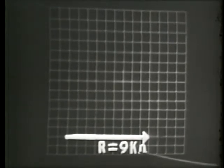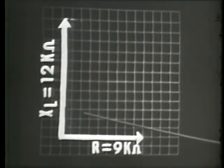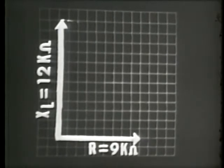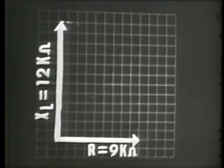Our next step is to plot these values as vectors on a graph. The resistance vector is plotted at zero degrees. If each block on our graph represents one thousand ohms, or 1K ohm, the resistance vector would be nine blocks long for the 9K ohms of resistance. Our next step is to plot the 12K ohms of inductive reactance. This 12K ohms of XL is plotted at 90 degrees, due to the voltage-current relationship through any inductor.